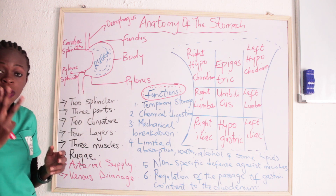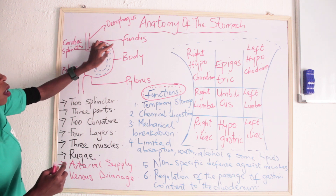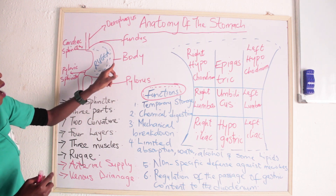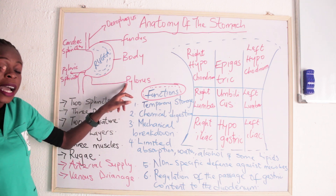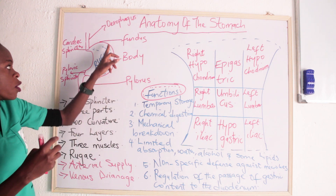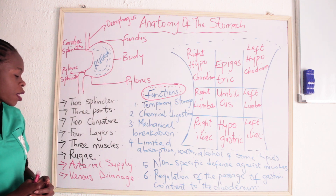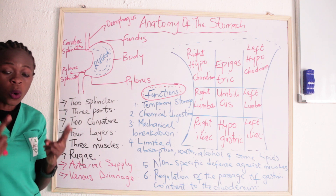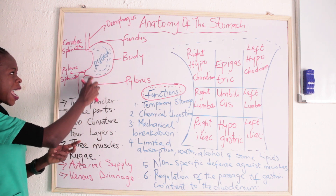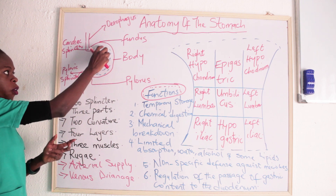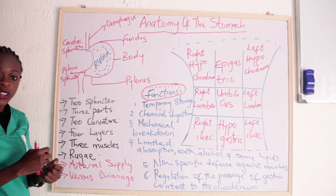The stomach has three parts: we have the fundus, which is the greater upper part, the body, and the pylorus. The stomach also has two curvatures — the greater curvature and the lesser curvature.